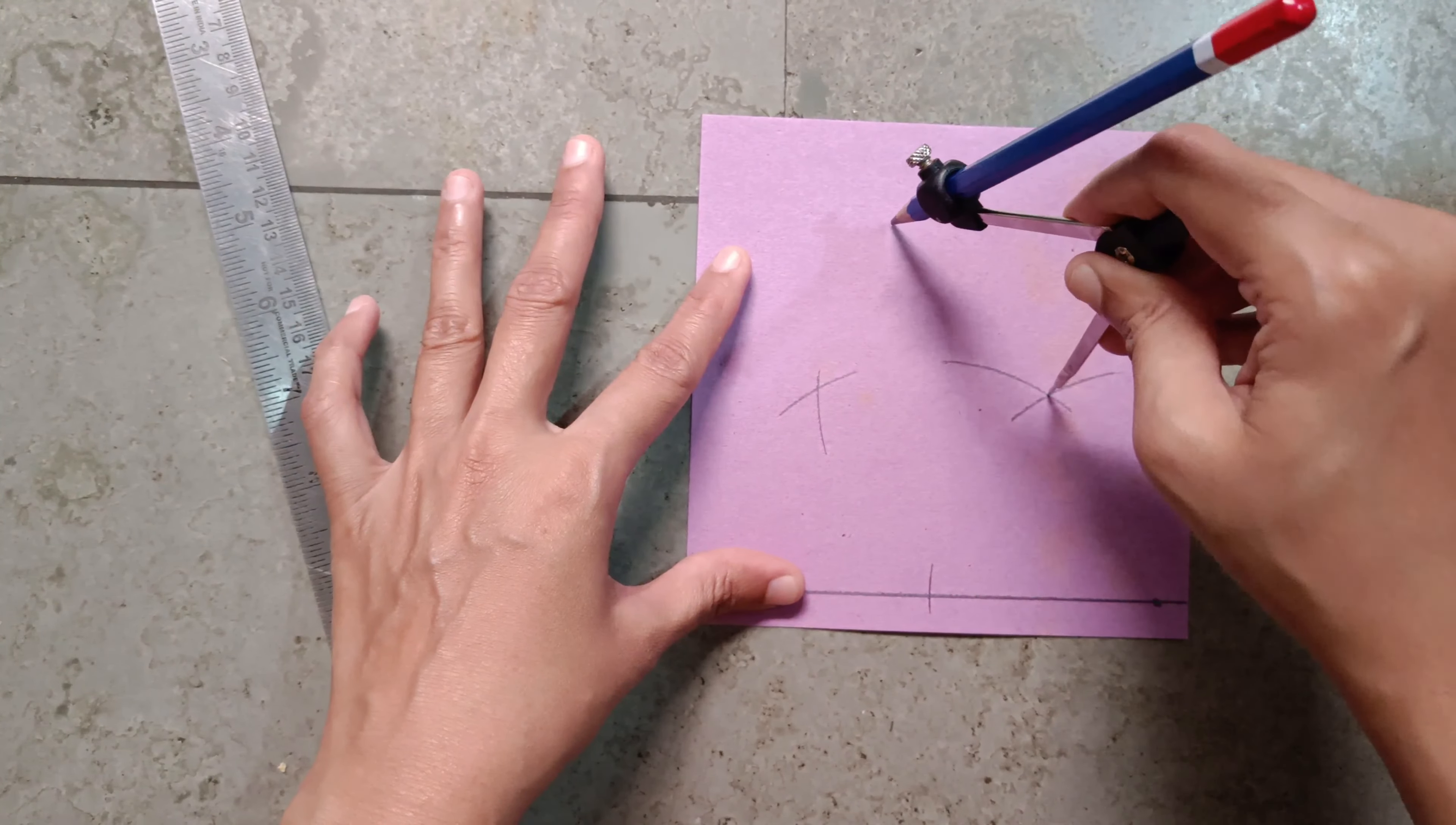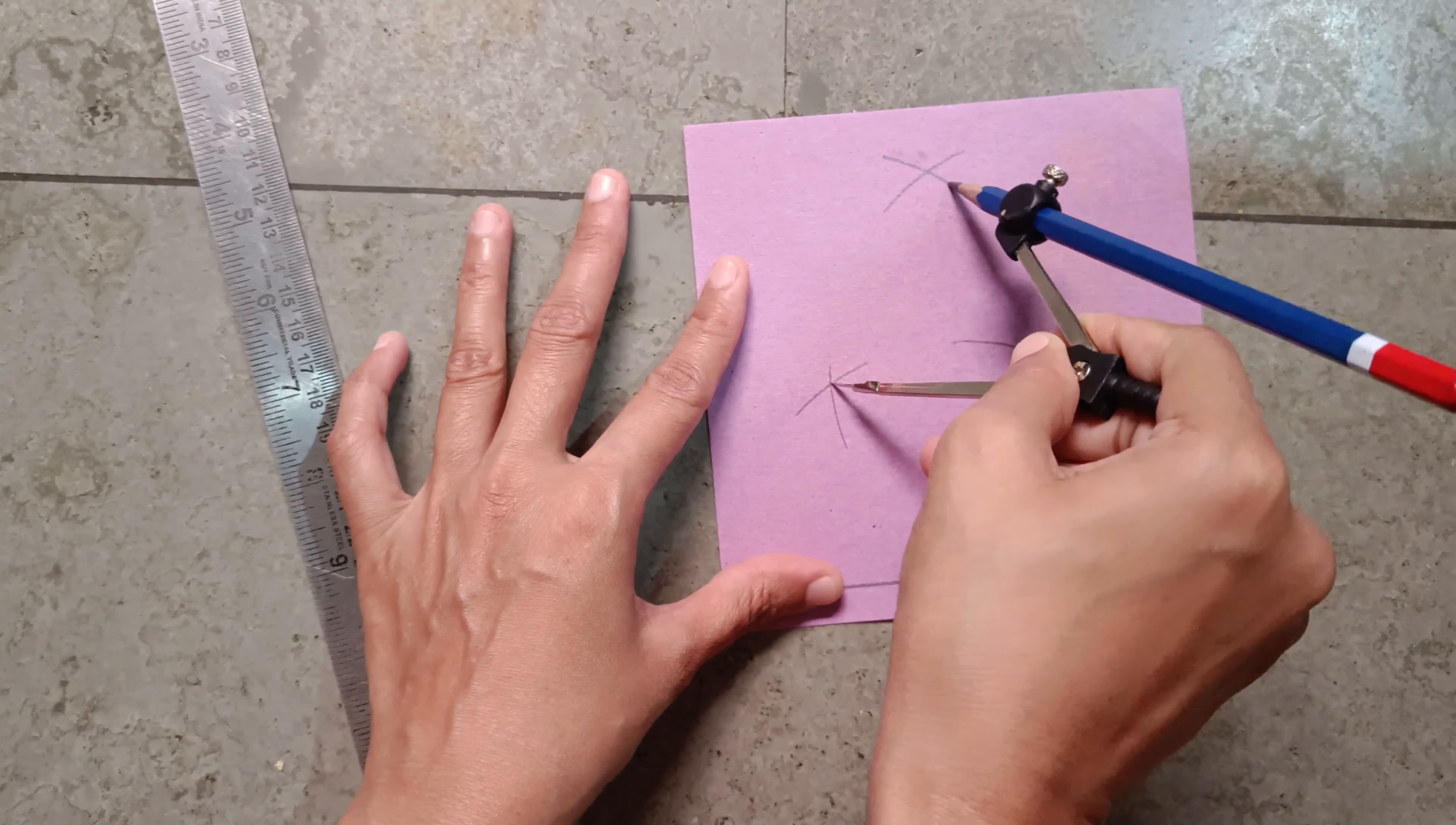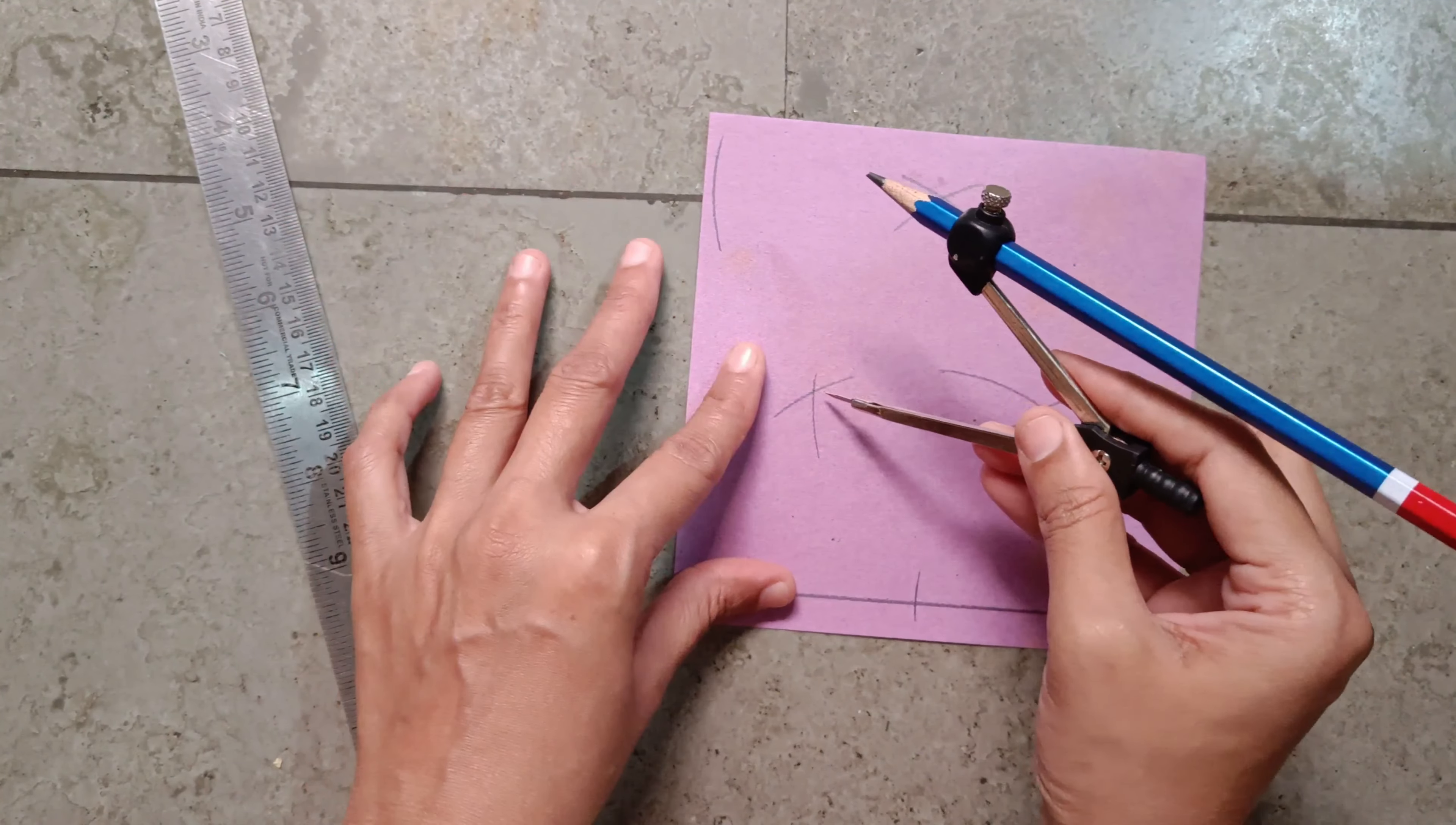Make a curve from here. Take this point and make a curve from here. From this point make a curve, take here.